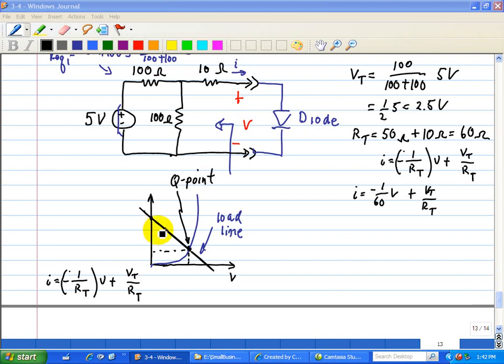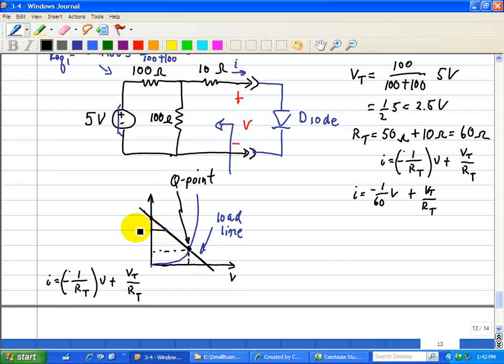in which ID, right here, is equal to 15 milliamps, and our voltage, Vd, is equal to 1.6 volts.